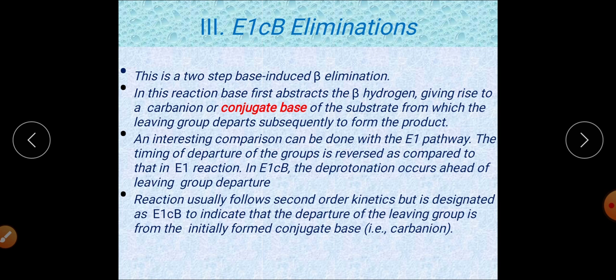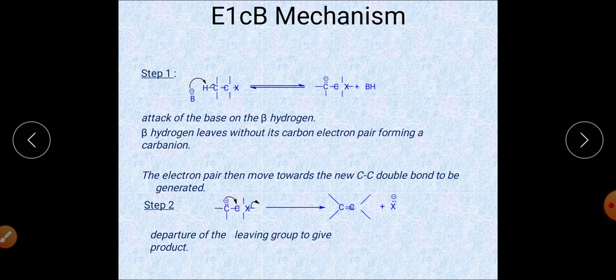After abstraction of the proton, a carbanion intermediate is formed. The first step in this reaction is generally a reversible step. The carbanion then leads to departure of the leaving group, giving rise to the product. So in this reaction the intermediate is the carbanion.